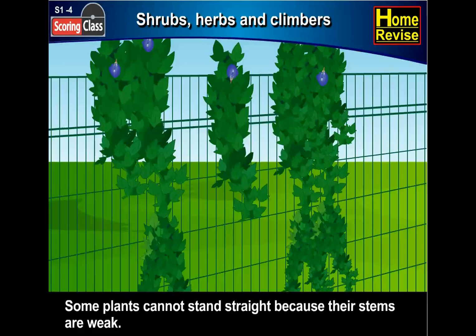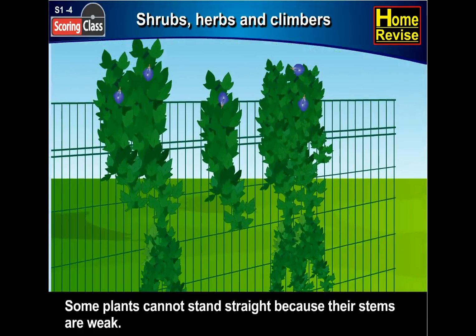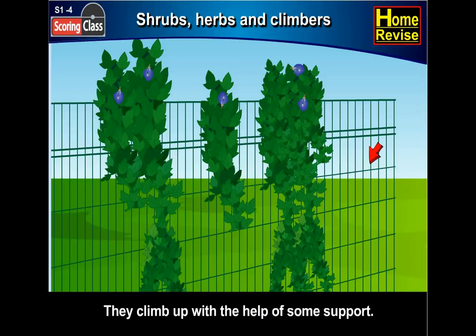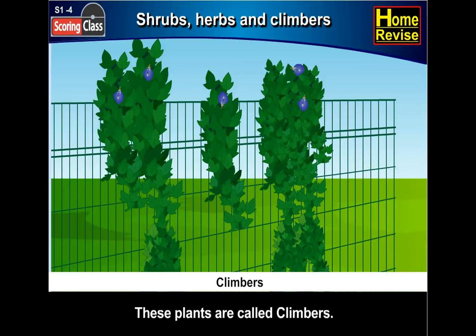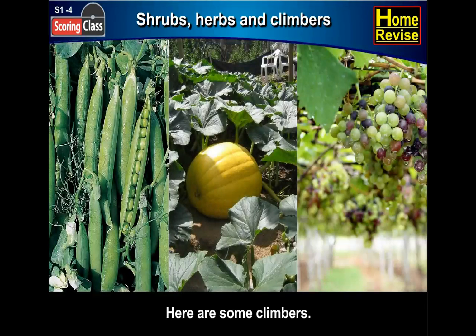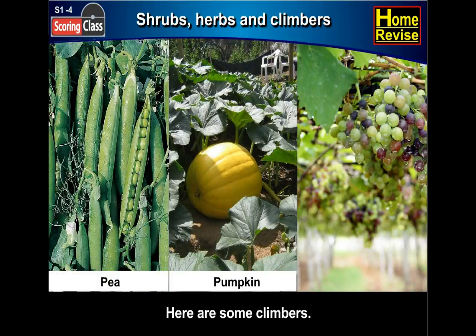Some plants cannot stand straight because their stems are weak. They climb up with the help of some support. These plants are called climbers. Here are some climbers: pea, pumpkin, grape vine.